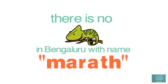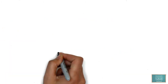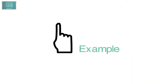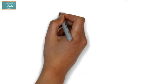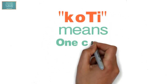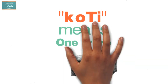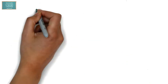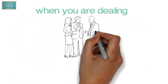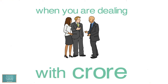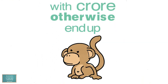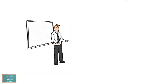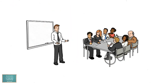Let's check out one more interesting example. In Kannada, 'koti' means monkey and 'koti' means one crore. So you better be careful when dealing with crore in Kannada, otherwise you will end up getting one beautiful monkey. We hope you now know how to pronounce Kannada letters and what happens when you pronounce them the other way.